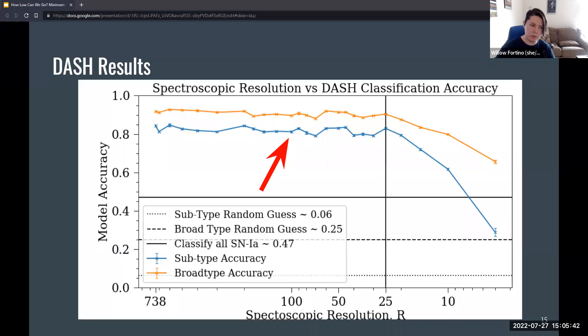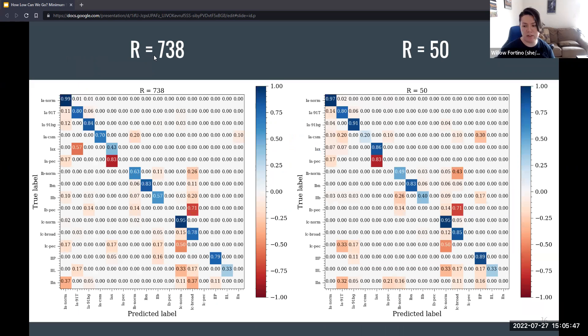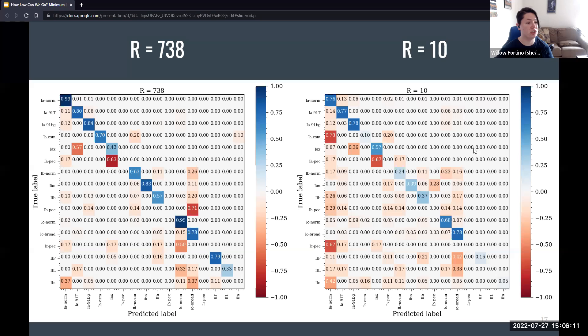So let's take a look at some confusion matrices from this astounding result to see what they look like. On the left here, we have high resolution confusion matrix from before. And on the right, we have one from R equals 50. You can see qualitatively, they're pretty the same. The classification power for most supernova subtypes hasn't degraded very much. If we go to R equals 10, which is well beyond that joint, that disconnect, then we see that the classification power degrades across the board. This is pretty amazing, and I hope you think so too.